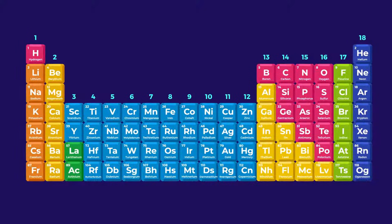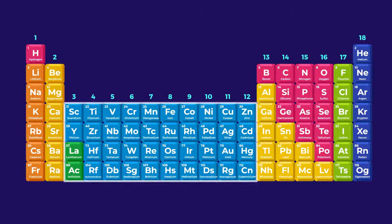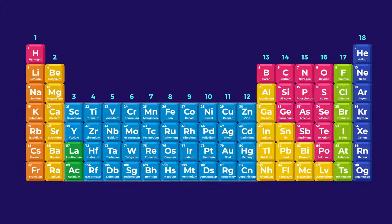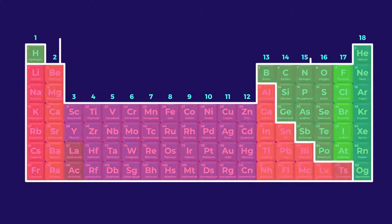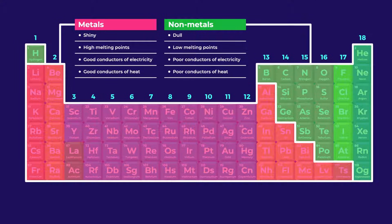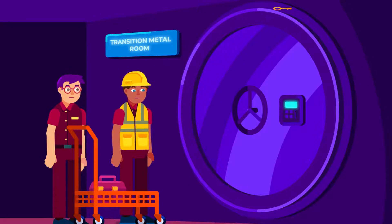Now let's explore the middle blocks, which are known as the transition metals. The precise boundary between the main groups and transition metals remains a topic of debate, but they generally span from group 3 to group 12. The term transition refers to the transitional nature of properties between typical metals and non-metals.